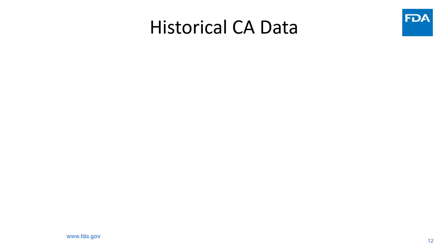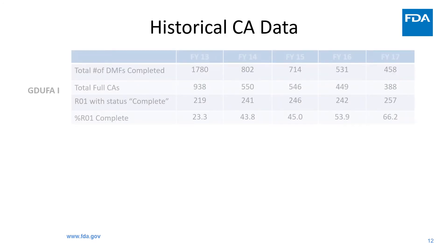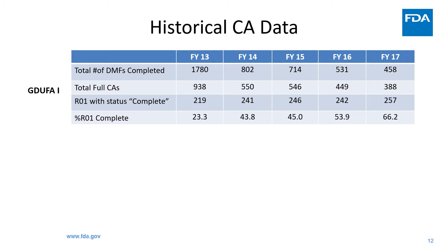Since the implementation of GDUFA-1 in October 2012, we have been keeping track of all the CAs we completed each year. Let's look at GDUFA-1 data for first cycle CAs broken down by fiscal year. At the time of GDUFA implementation, we had a huge backlog of drug master files to perform initial completeness assessments. That year, we completed over 900 full CAs, so the cycle 1 percentage with status complete for the very first year was quite low, around 23%.